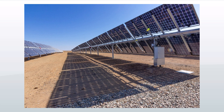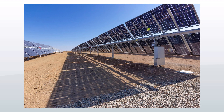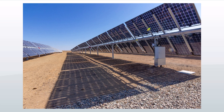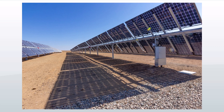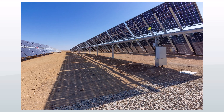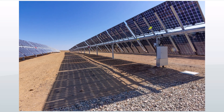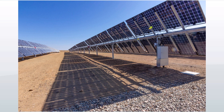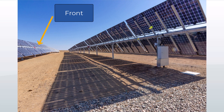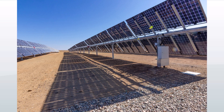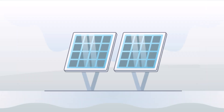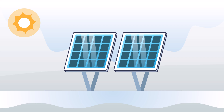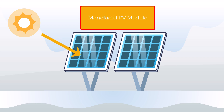At the basis of any PV system is the PV module. A bifacial PV module is a type of solar module that is designed to capture sunlight from both its front and back surfaces. In a traditional one-sided solar module, only the front surface of the module is able to produce electrical power from sunlight.